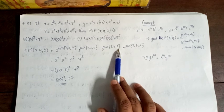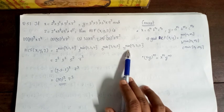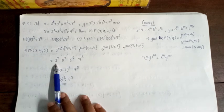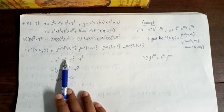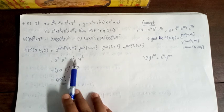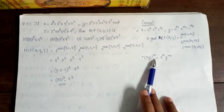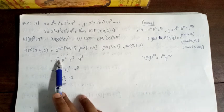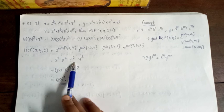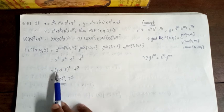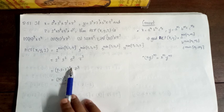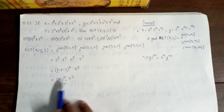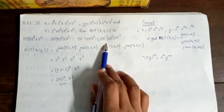So HCF equals 2 raised to minimum of (3,4,2) into 3 raised to minimum of (3,4,2) into 5 raised to minimum of (3,4,2) into 7 raised to minimum of (3,3,5). This gives 2 squared, 3 squared, 5 squared, 7 cubed, which equals 2 into 3 into 5 whole squared into 7 cubed. So our option 4 is correct.